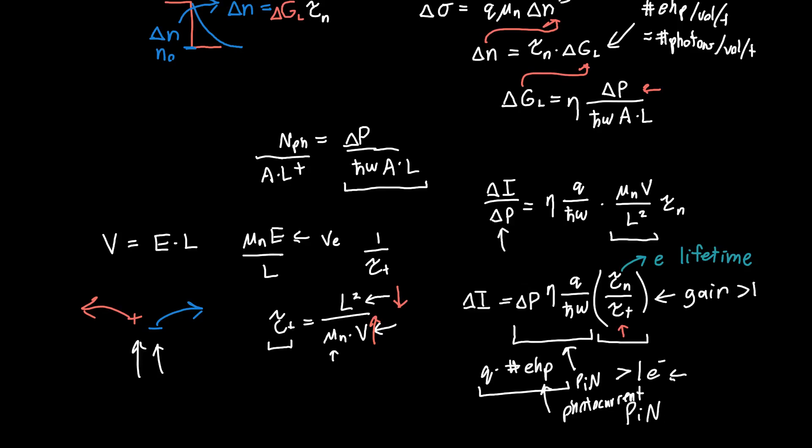Whereas with a photoconductor, because our generated electrons are sticking around for longer, so because their lifetime tau_n can be much larger than the time it takes them to get from A to B, we can actually measure a larger current for a given photocurrent. That's pretty neat, that's pretty awesome.